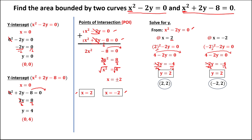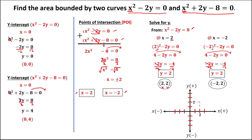Now we need to graph. Start plotting the points of intersection. From the first coordinate, x is positive 2 and y is positive 2 — plot and connect. This is the point (2, 2). The other coordinate is x equals negative 2 and y is positive 2 — plot and connect. This is the other point of intersection (−2, 2).